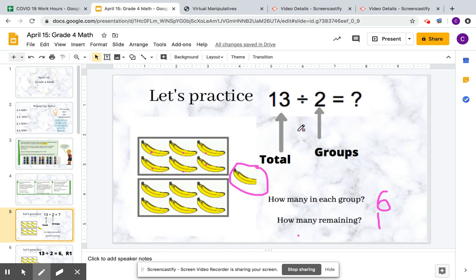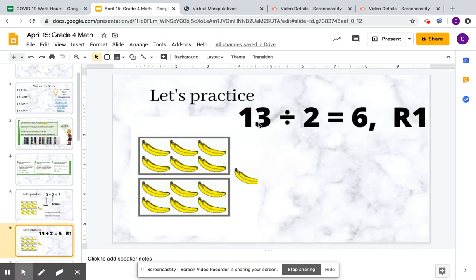If we split it into two groups, we're dividing, so we can represent that on our next slide. It says 13 divided by 2 equals 6, and the remainder is 1, because there's one banana left over.